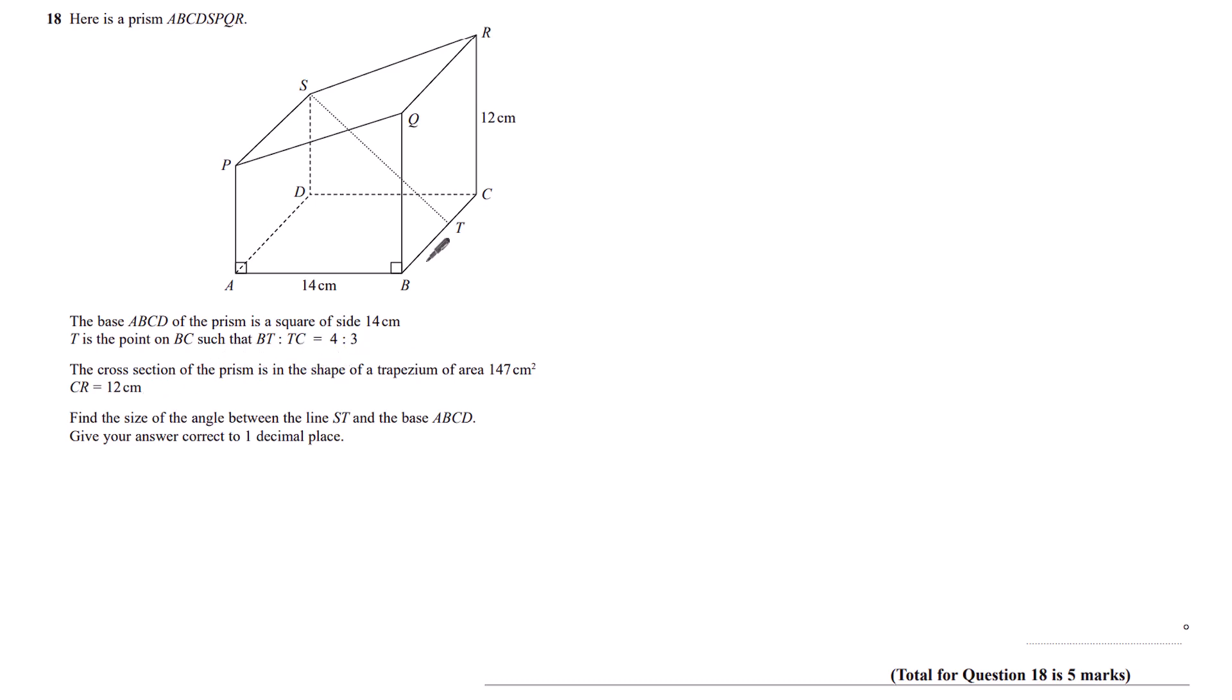The cross section of the prism is in the shape of a trapezium of area 147 centimeter squares. CR is equal to 12. Find the size of the angle between the line ST and the base ABCD. Give your answer correct to one decimal place.